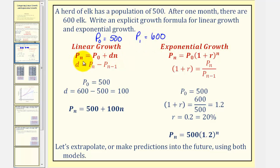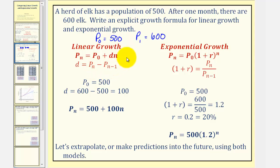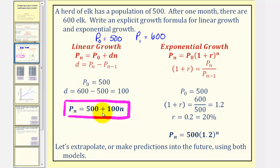For linear growth, we'll have p sub n equals p sub zero plus d times n. We'll begin by determining d, the common difference. So if n is one, notice how this would be p sub one minus p sub zero. Or in our case, six hundred minus five hundred, which is equal to one hundred. Therefore, the explicit equation for linear growth would be p sub n equals five hundred plus one hundred times n.